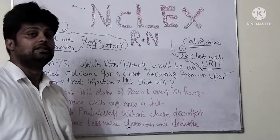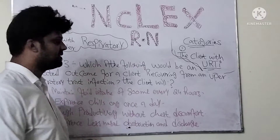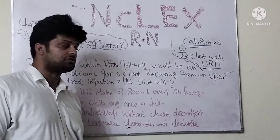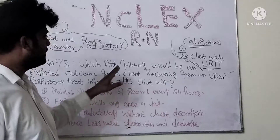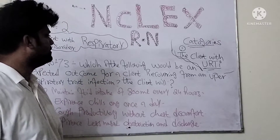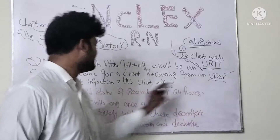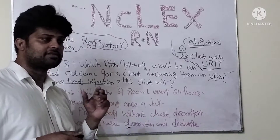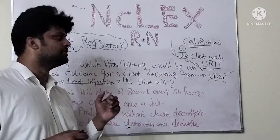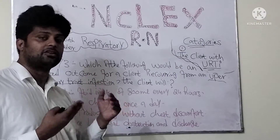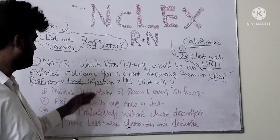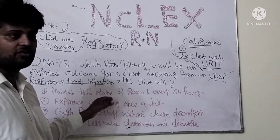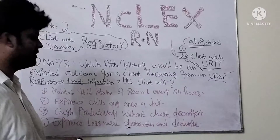I also speak this full sentence in Urdu because there are some students who didn't understand English, so you have to read again. This is saying that a patient has recovered from the upper respiratory tract infection. So if the patient has recovered from the upper respiratory tract infection, which is the first priority? You have to choose from these four options and take one option which is the correct answer.